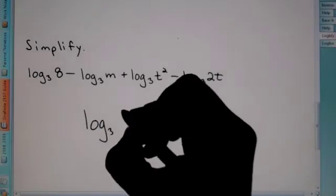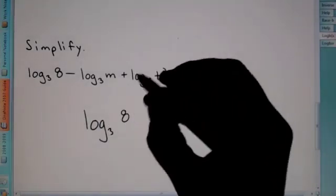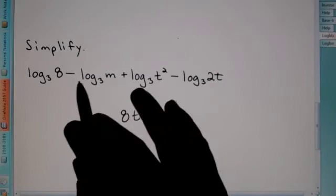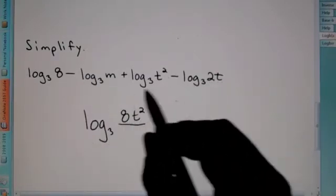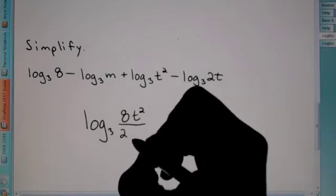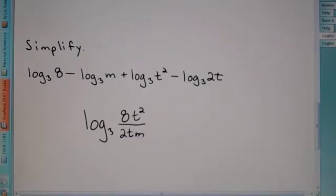So, this 8 times, we have a t squared. And since these are both negative, we're going to put those in the denominator. We have a 2t and an m. So, we have 2t and an m.